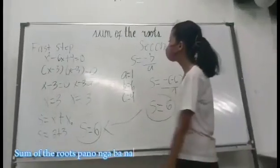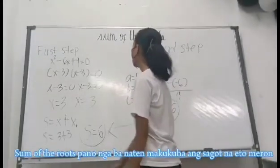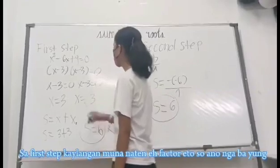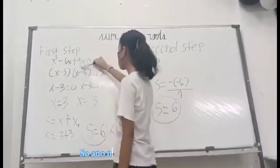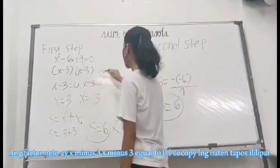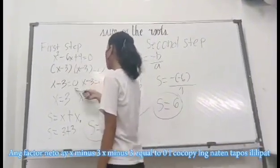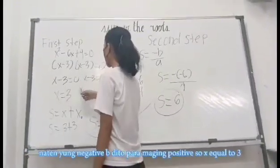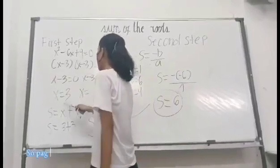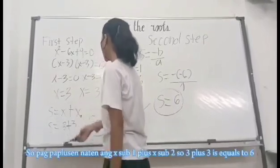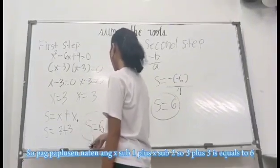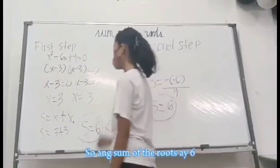Sum of the roots, how do we get the answer? We have two steps and let's start with the first step. In the first step, we need to factor first. So what are the factors of this? The factors are x minus 3 times x minus 3 equals 0. We copy it, then we'll transfer negative 3 here to make it positive. So x equals 3. Then we add x sub 1 times x sub 2, so 3 plus 3 equals 6. So the sum of the roots is 6.